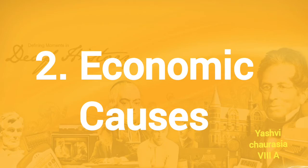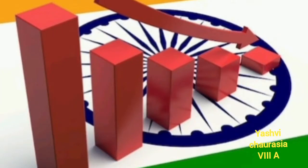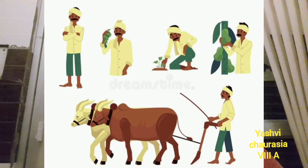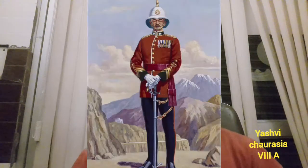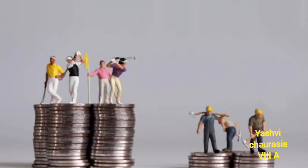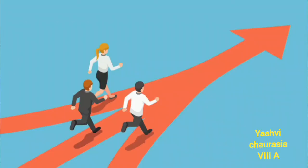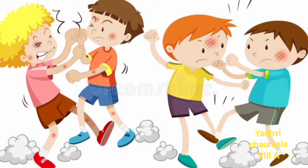Second, economic causes. Many of the policies of EIC were affecting the economy of India. Peasants and lower caste workers suffered, being forced to do their work as strictly ordered by British officials but receiving very little wage. Another example is unfair competition between Indian traders, which led to conflict between both sides.